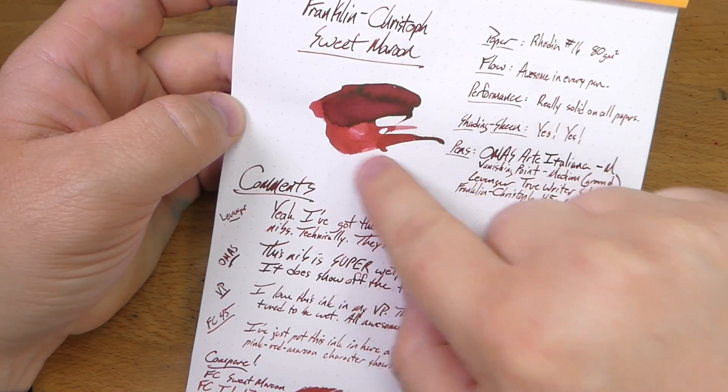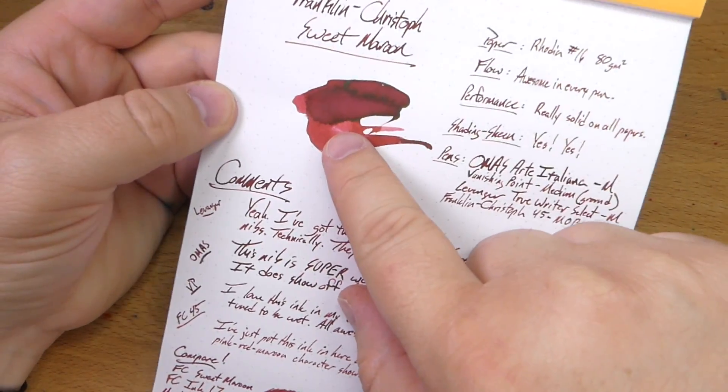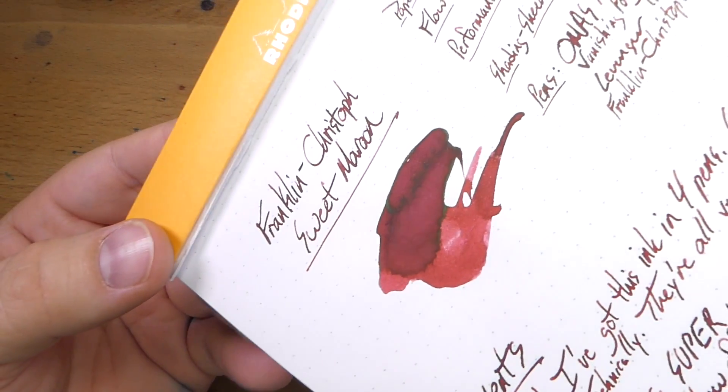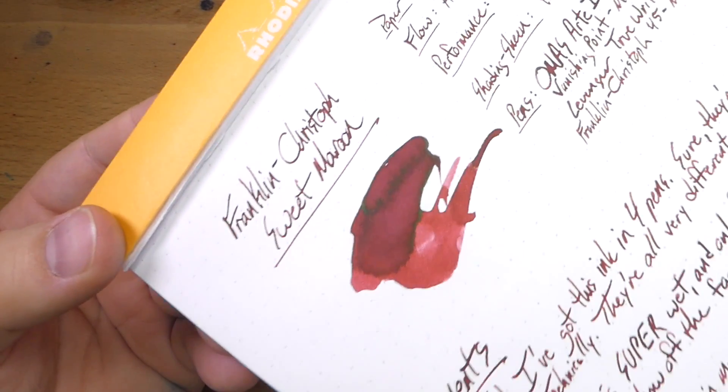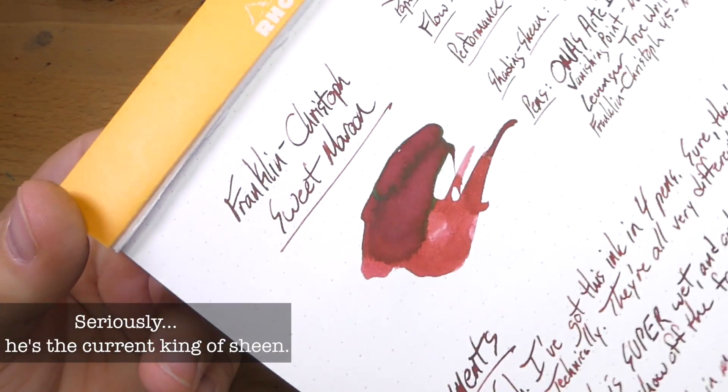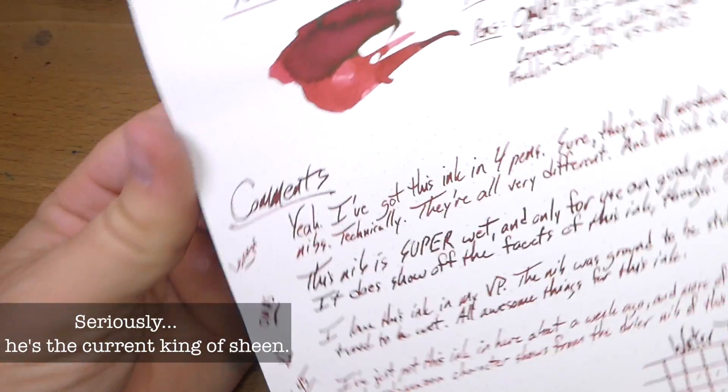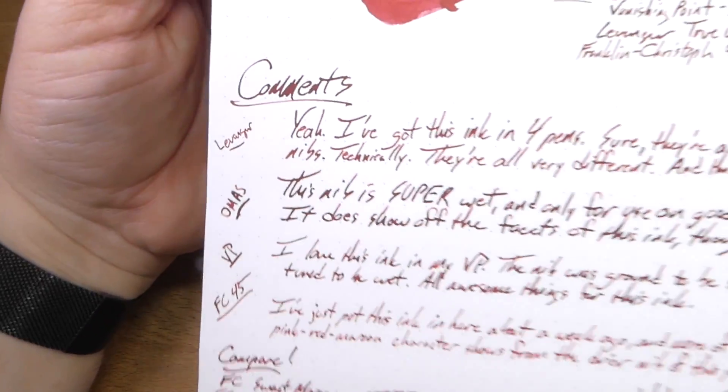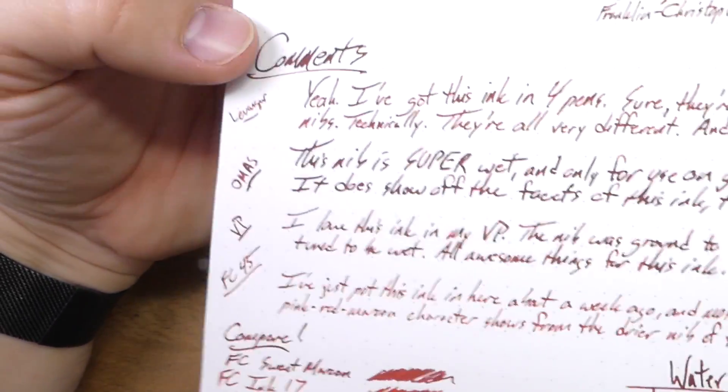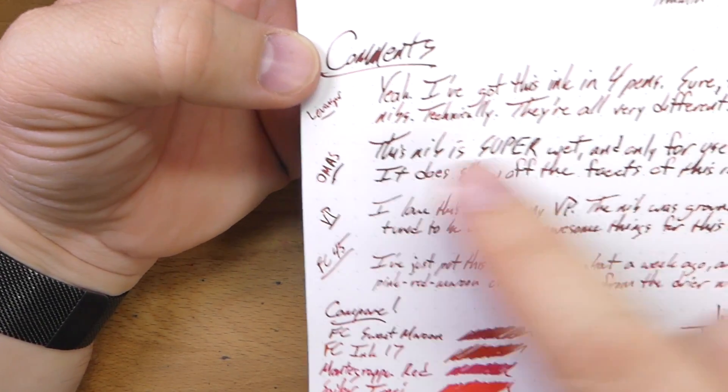You get some stuff in this ink that you don't normally see in Franklin Christoff inks. Namely, a good bit of shading in all of these writing samples. And also, sheen. You don't get a whole lot of sheen out of Franklin Christoff inks usually. I'm not sure what they did differently. This has a beautiful green sheen if you put it down heavily enough.